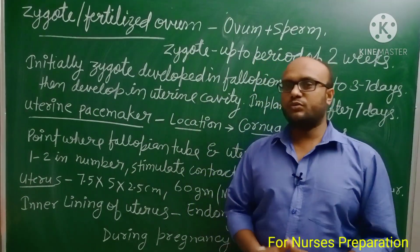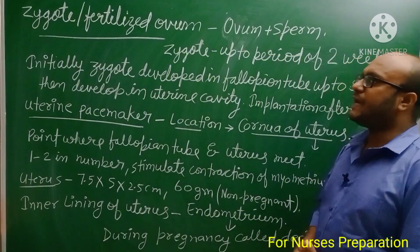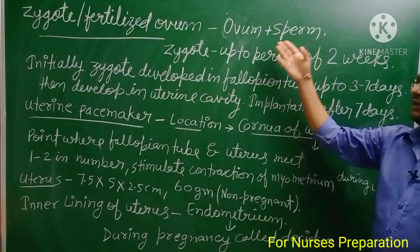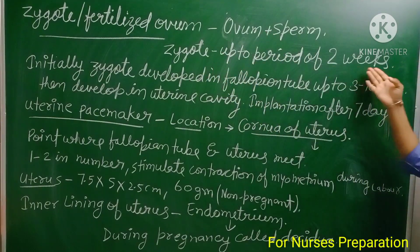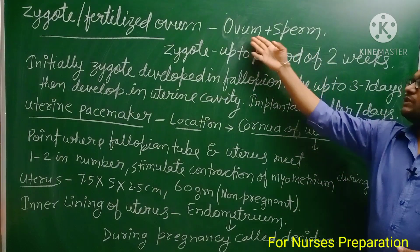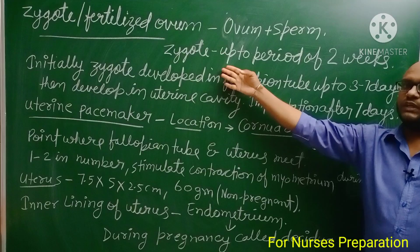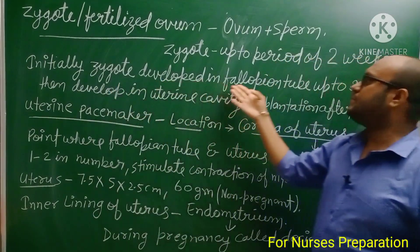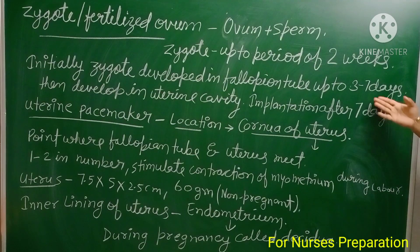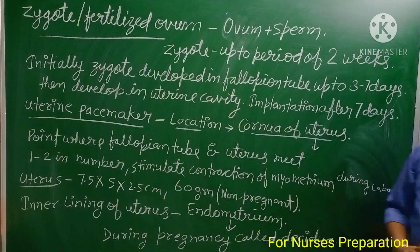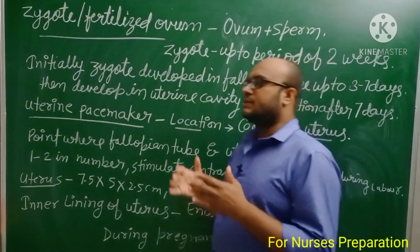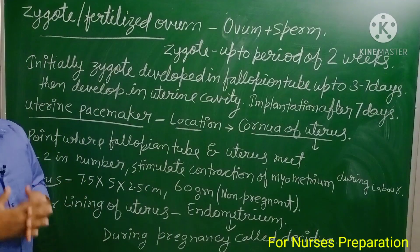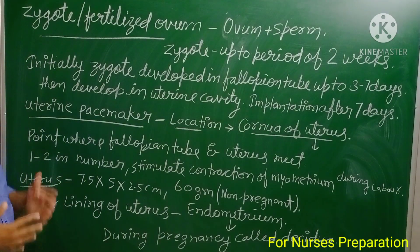A zygote is also known as the fertilized ovum, formed by the union of an ovum and sperm. This cell is known as a zygote up to two weeks. Initially, the zygote develops in the fallopian tube for three to seven days, then develops into the uterine cavity. After seven days it gets implanted into the wall of the uterus, and further development takes place there.